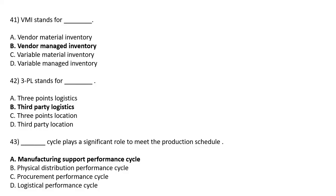DASH Cycle plays a significant role to meet the production schedule — Option A: Manufacturing Support Performance Cycle, Option B: Physical Distribution Performance Cycle, Option C: Procurement Performance Cycle, Option D: Logistical Performance Cycle. The correct answer is Option A: Manufacturing Support Performance Cycle.